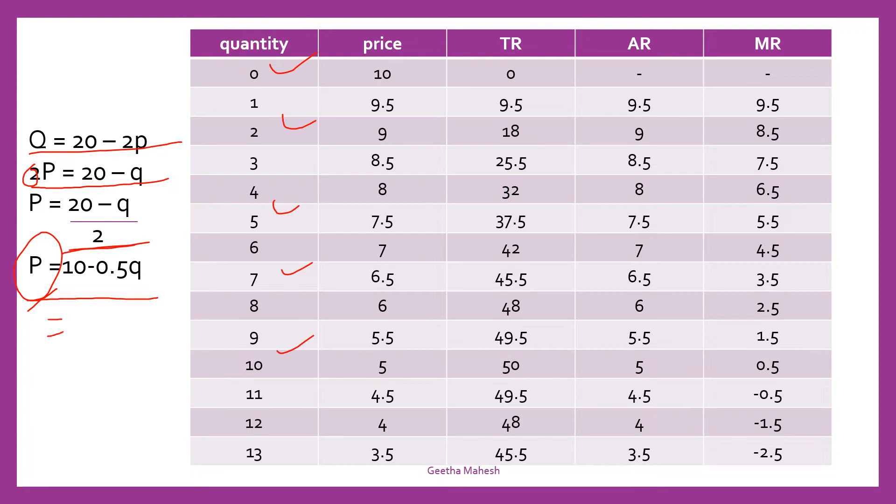Let us assume that the quantity will be 0. 10 minus 0.5 into 0. This is equals 10 minus 0.5 into 0. Of course, it is 0. So, 10 minus 0 is 10. See, here the price is 10. In similar manner, you can substitute different quantities.